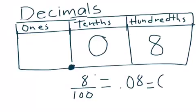Or another way is 0.08, because I have nothing in the ones place. So I can just put a 0 right here.